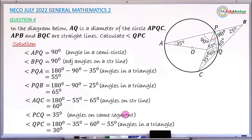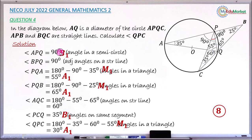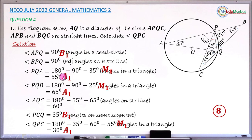Let me share the mark distribution for this question from the marking scheme. The first mark is a bonus one mark for obtaining angle APQ equals 90 degrees. The next mark is a method mark for writing the correct equation to find angle PQA using the sum of angles in a triangle. Correctly getting 55 degrees earns one accuracy mark.